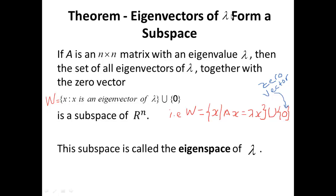Theorem: eigenvectors of the eigenvalue Lambda form a subspace. Let A be an n by n matrix and let Lambda be an eigenvalue of A. Define W to be the set of all x such that x is an eigenvector of Lambda, union the singleton with the zero vector — i.e., W is the set of all x such that Ax equals Lambda x, union the zero vector. W is a subspace known as the eigenspace of Lambda.